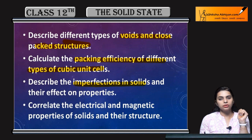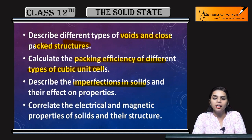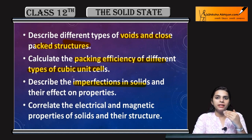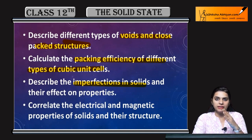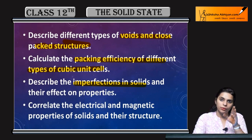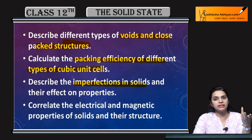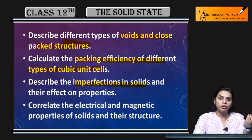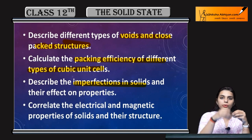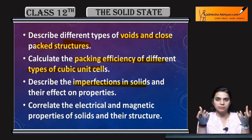Next is imperfections and defects in solids. Now that the solid is made, you have seen its physical properties and studied its internal structure. Now we will see the defects in it — imperfections. These can be added manually or they can occur naturally. For example, if you keep a solid in sunlight and its internal structure changes, or if you manually heat the solid or add an impurity to it — we will study all of these.